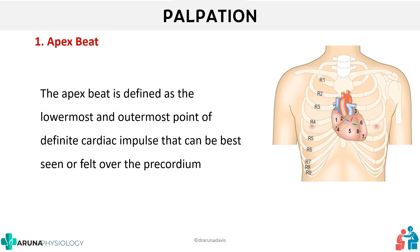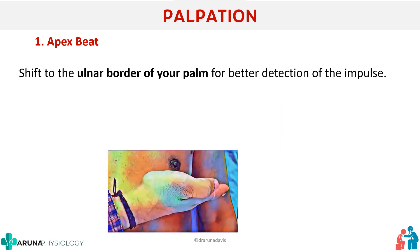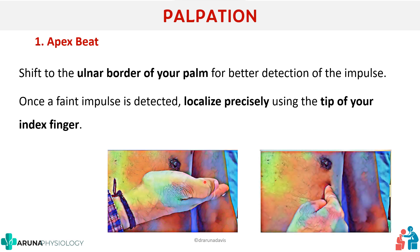To examine for the apex beat, first place the palm of the right hand flat over the left chest parallel to the ribs, with the fingertips in the mid-axillary line. Concentrate if you can feel any apical impulse. Then, if you feel an impulse, localize it by placing the ulnar border of the palm for better localization. Gradually shift the palm to the ulnar position, and then slowly localize it further with the tip of your index finger.